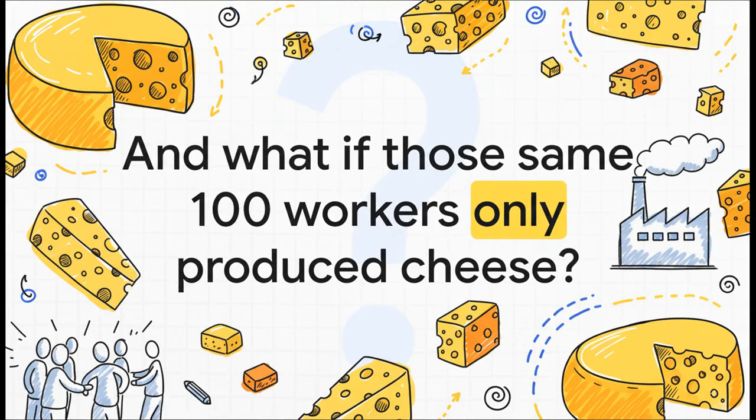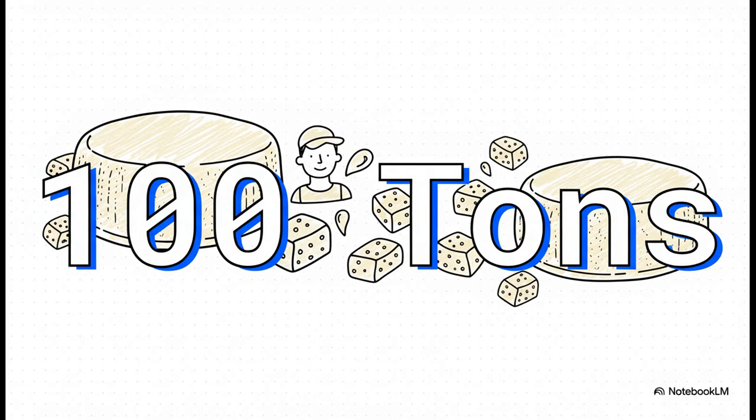Same logic, but now let's switch gears. What if we task those same 100 workers with making nothing but cheese? What would their max output be then? They could churn out 100 tons of cheese, because it only takes one worker per ton. So our labor constraint sets the production limit at either 50 tons of milk or 100 tons of cheese.